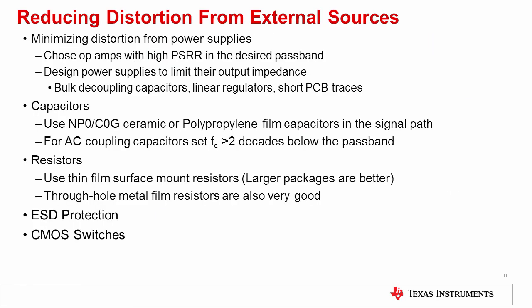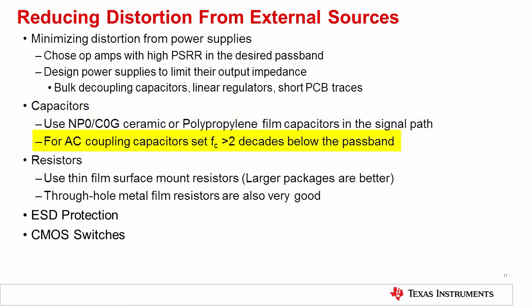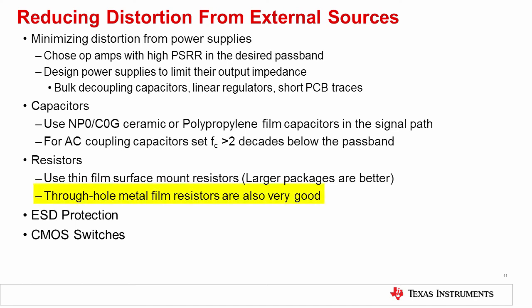In summary, there are several guidelines for reducing distortion from external sources. First, minimize distortion from power supplies by choosing amplifiers with high power supply rejection ratio in the desired signal passband. Also, use large bulk decoupling capacitors near the voltage regulator output to decrease AC impedance, and minimize PCB trace length. Use low distortion C0G, NP0, or polypropylene film capacitors in the signal path. For AC coupling capacitors, place the corner frequency greater than two decades below the signal passband. Use thin film surface mount resistors when small package sizes are required. When adding external ESD protection, select protection devices with the lowest junction capacitance available, and place the ESD protection at low impedance nodes to minimize the distortion contribution.